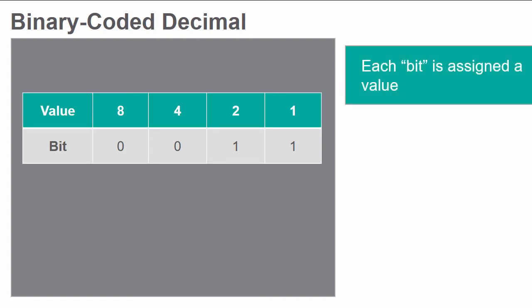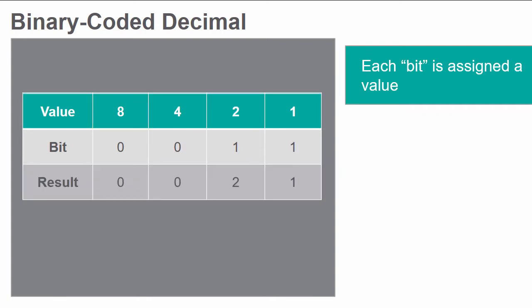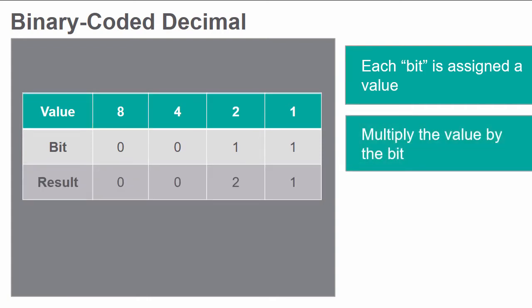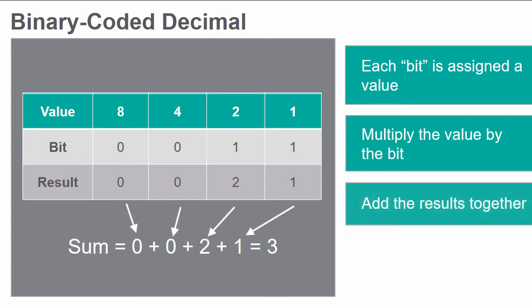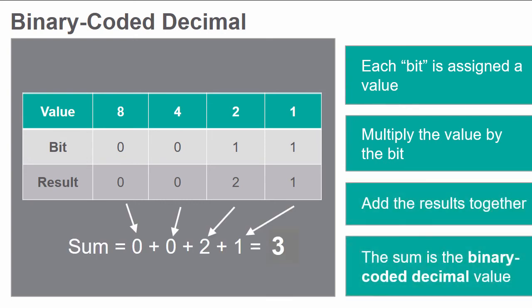Each bit or number in the row of a truth table is assigned a value depending on the sequence and its position. The number furthest to the right is given a value of 1. The number to its left is given a value of 2, and then 4 and 8. Once values have been assigned to each bit, multiply the value by the bit and add all of the values together. The sum of the values is the binary coded decimal value.